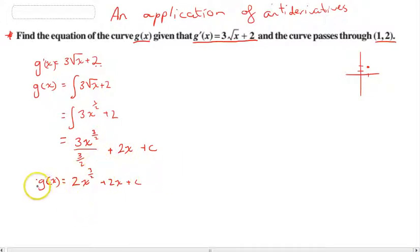Okay, so we now know that g(x) = 2x^(3/2) + 2x + c. But we don't know what the c value is. So we can find it though. We can find it because we know that 2x^(3/2) + 2x + c passes through the point (1, 2).